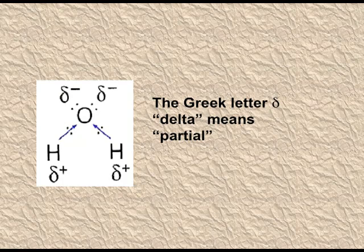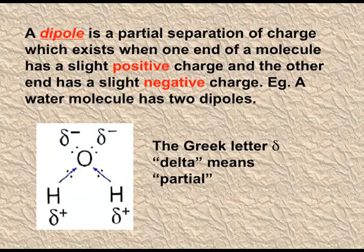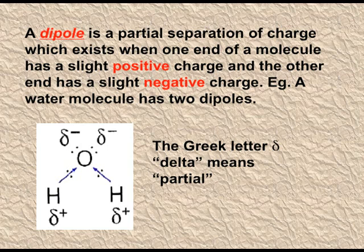Dipole interactions occur when there is a bond between two dissimilar atoms and the electronegativity of one atom is higher than the other, causing the shared pair of electrons to shift towards the more electronegative element, creating a partial charge (delta). In water, oxygen is more electronegative, so the shared electron pair shifts towards oxygen — oxygen has a partial negative charge and hydrogen has a partial positive charge. This creates a dipole, and dipole-dipole interactions develop between the oppositely charged ends, making them stronger.